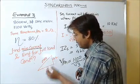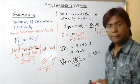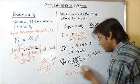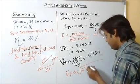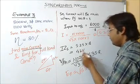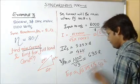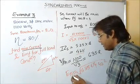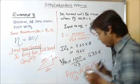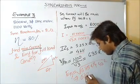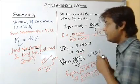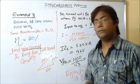So Ep comes out as the square root of (635.8 squared plus 42 squared), which gives Ep equal to 637 volts per phase. This is the answer for the full load condition — minimum current is 5.25 A and the corresponding EMF is 637 volts.